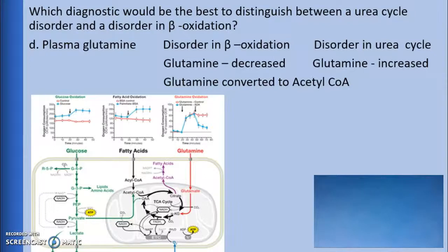On the other hand, a disorder in the urea cycle would produce an increased glutamine. Because this test shows different results for either issue, this is the best test to distinguish between a urea cycle disorder and a beta-oxidation disorder.